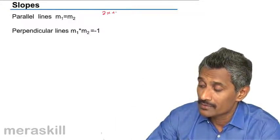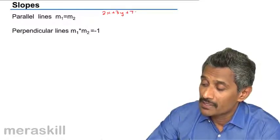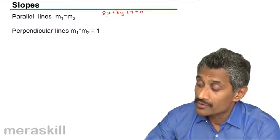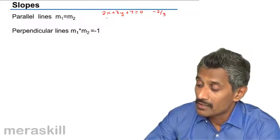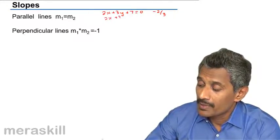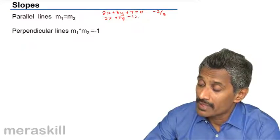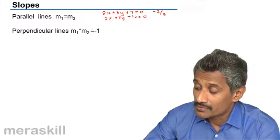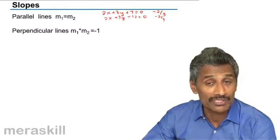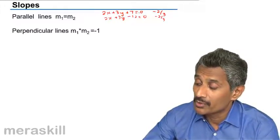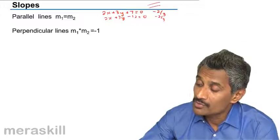Say for example 2x plus 3y plus 7 is 0. The slope of this is going to be minus a by b, minus 2 by 3. 2x plus 3y minus 12 is 0. This one also has slope minus 2 by 3. These two are not same equations but these are lines that are going to be parallel to each other.